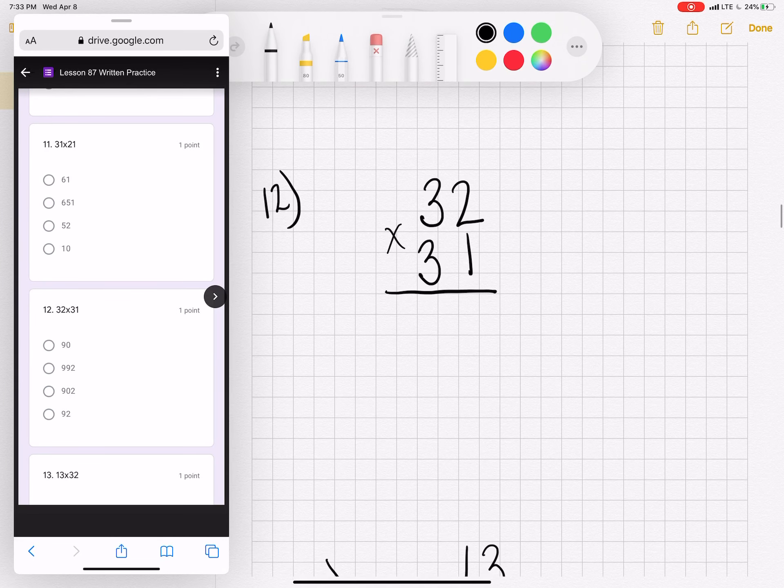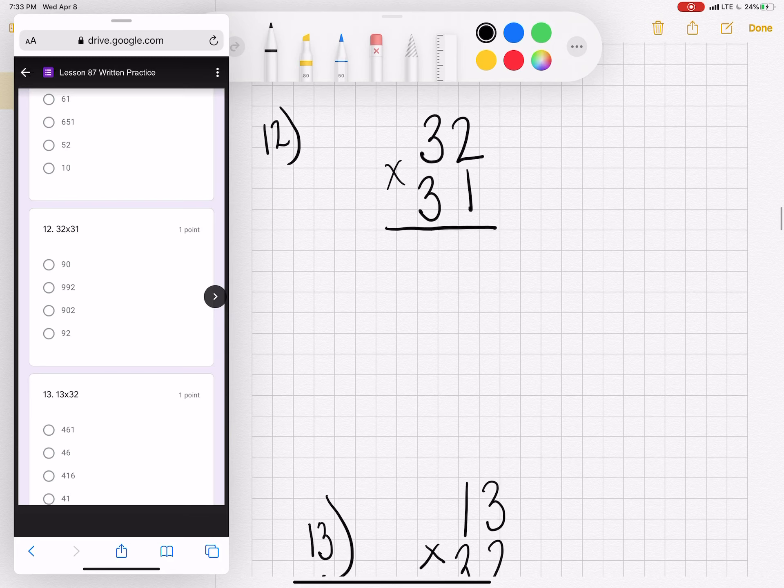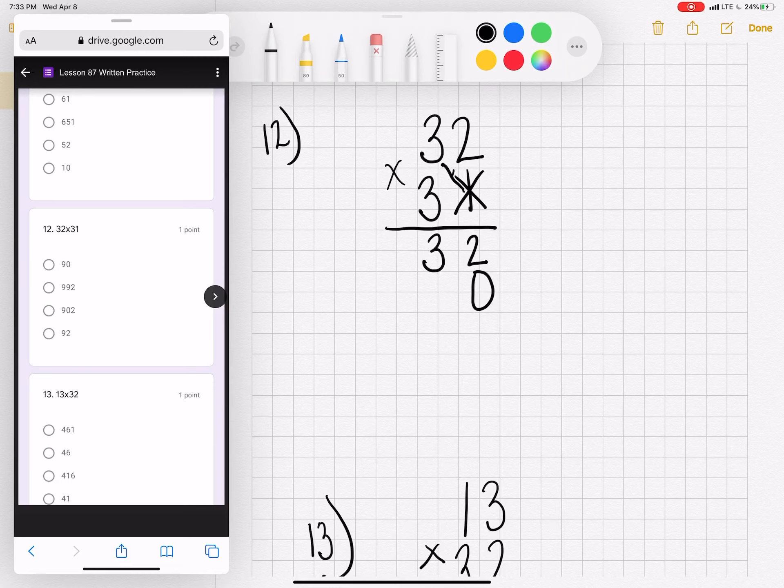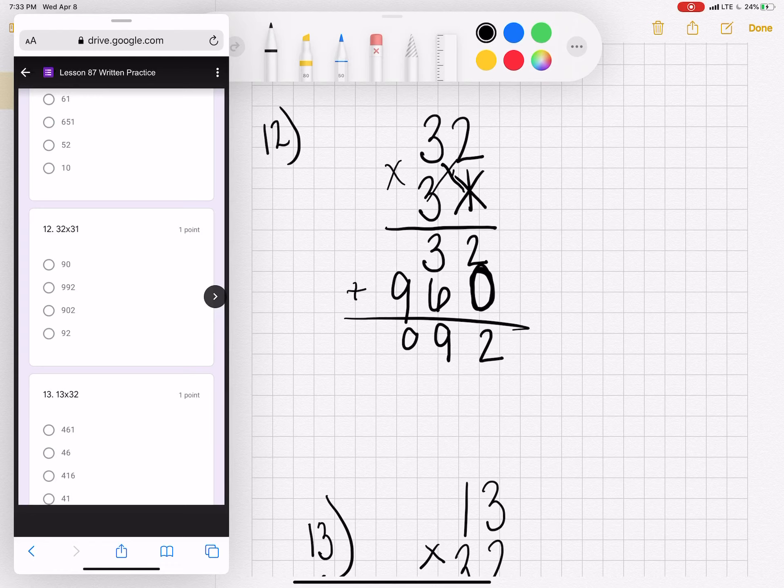Another example. Number 12. 32 times 31. Two times one is two. One times three is three. Mark out this one. Three times two. Oh, mark out the one and place a zero. That's another big mistake, and I almost made it. When people forget to place the zero right here. That is very important. Now three times two is six. Three times three is nine. Add two and zero, two. Six and three, nine. Nine and nothing, nine. Nine hundred and ninety-two is the answer to number 12.